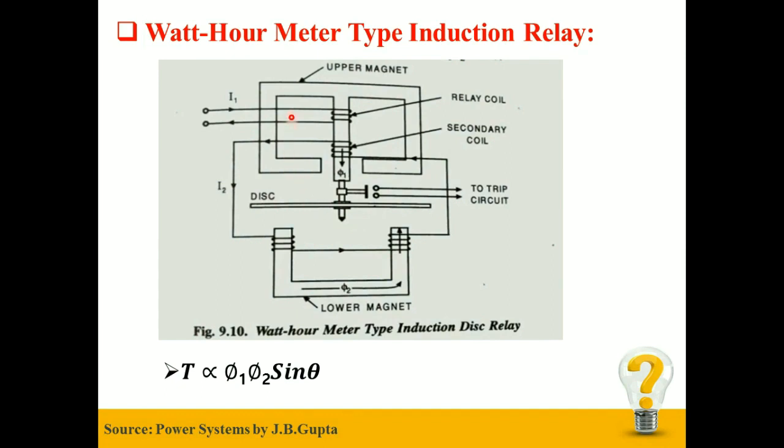Primary winding carries current I₁, while secondary winding is connected to the U-shaped electromagnet. Primary winding carries the current I₁, which produces φ₁. This φ₁ leads to EMF being induced in the secondary winding, which causes I₂ to flow and produce φ₂. φ₂ will lag φ₁ by angle θ.